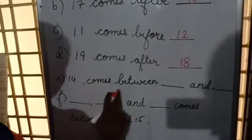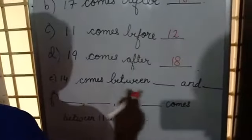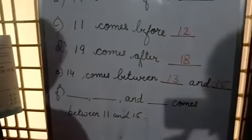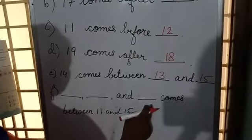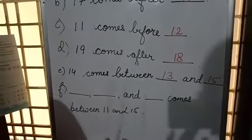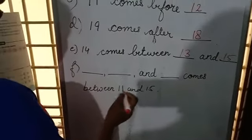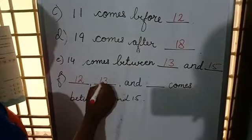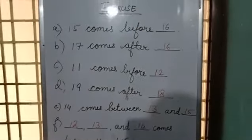Then, number E: 14 comes between dash and dash. So, which number will come? 14 comes between 13 and 15. Last one, number F: dash, dash comes between 11 and 15. So, what are the numbers that will come in between 11 and 15? After 11 is 12, then after 12 is 13, and after 13 is 14. So, 12, 13 and 14 will come in between 11 and 15.